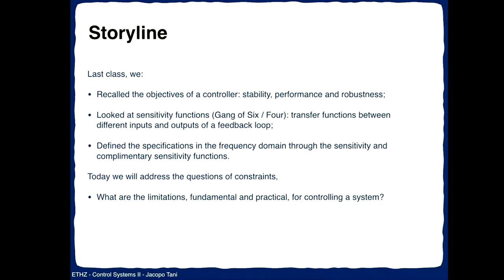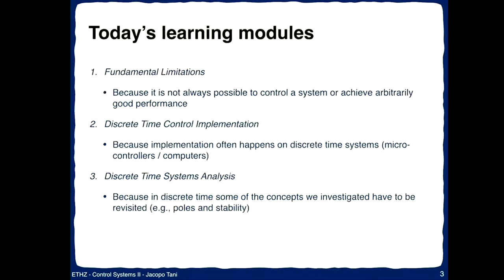In order to obtain good performance, we wanted an open-loop transfer function — the multiplication in the frequency domain of the controller and plant transfer functions. We focused on this because it is part of the definition of the sensitivity and complementary sensitivity. By shaping them appropriately over the frequency domain, we could generally obtain both disturbance rejection and noise attenuation. Today, we will look instead at what stands in our way — the constraints and fundamental and practical limitations in doing controls.